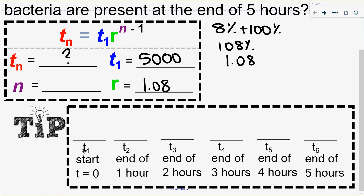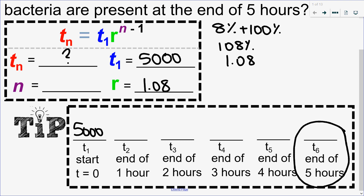So t₁ is the start before it begins growing — at the start I have 5,000 bacteria, that's my first term. t₂ is the end of the first hour, t₃ is the end of two hours, t₄ is the end of three hours, t₅ is the end of four hours, and t₆ is the end of five hours. So at the end of five hours is actually the sixth term, making n equal to six, not five.